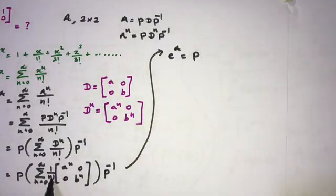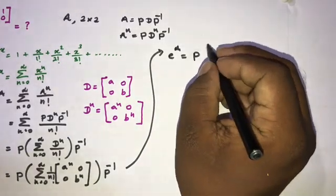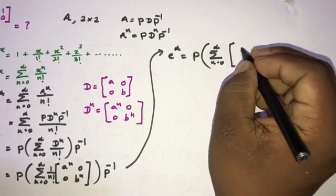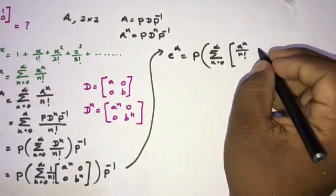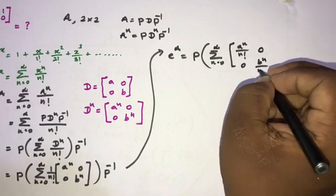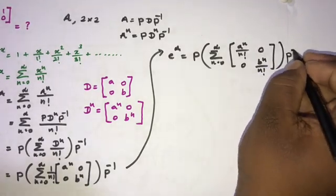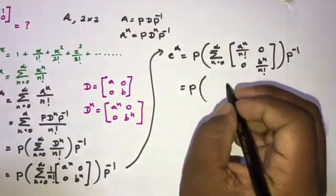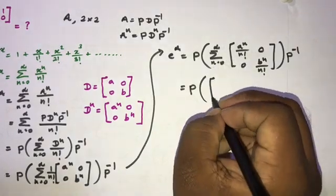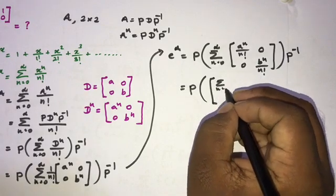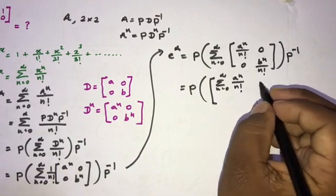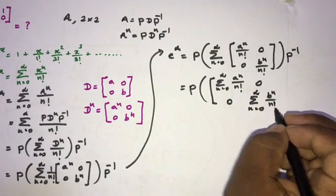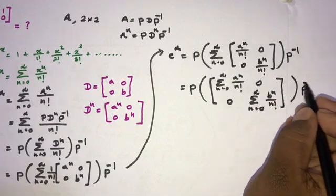Then dividing by n factorial, we can write P times the sum from 0 to infinity of the matrix with a to the n over n factorial in the top left, 0s off-diagonal, and b to the n over n factorial in the bottom right, times P inverse.